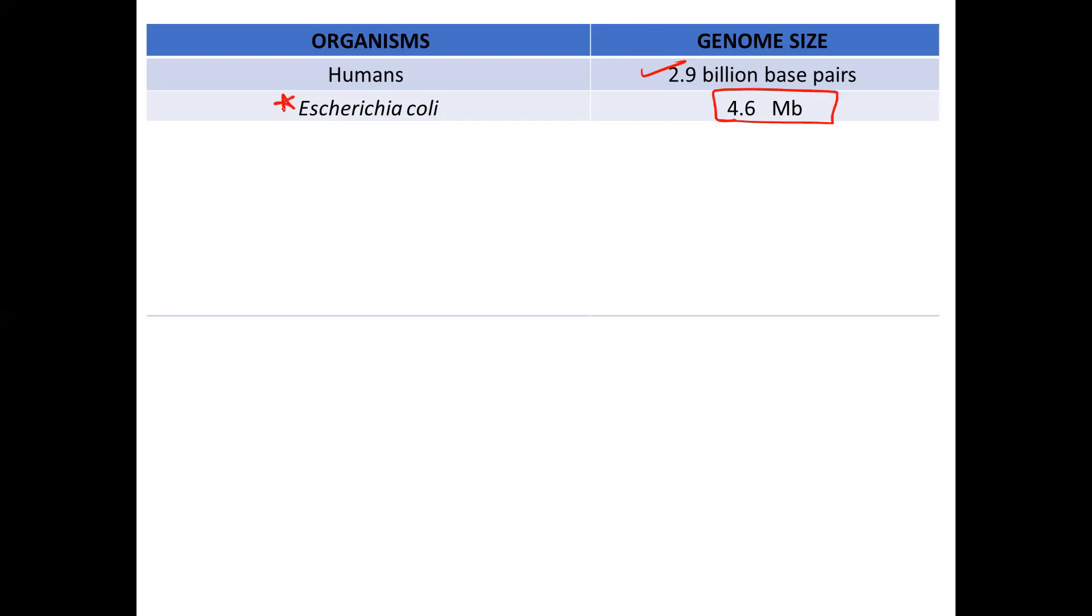It is very important since E. coli is a very commonly used vector. Next, Saccharomyces cerevisiae, one of our favorite yeast which is used as a model organism to study different things. The genome size is comparatively larger because it's obviously a eukaryote, so it is 12.1 MB.